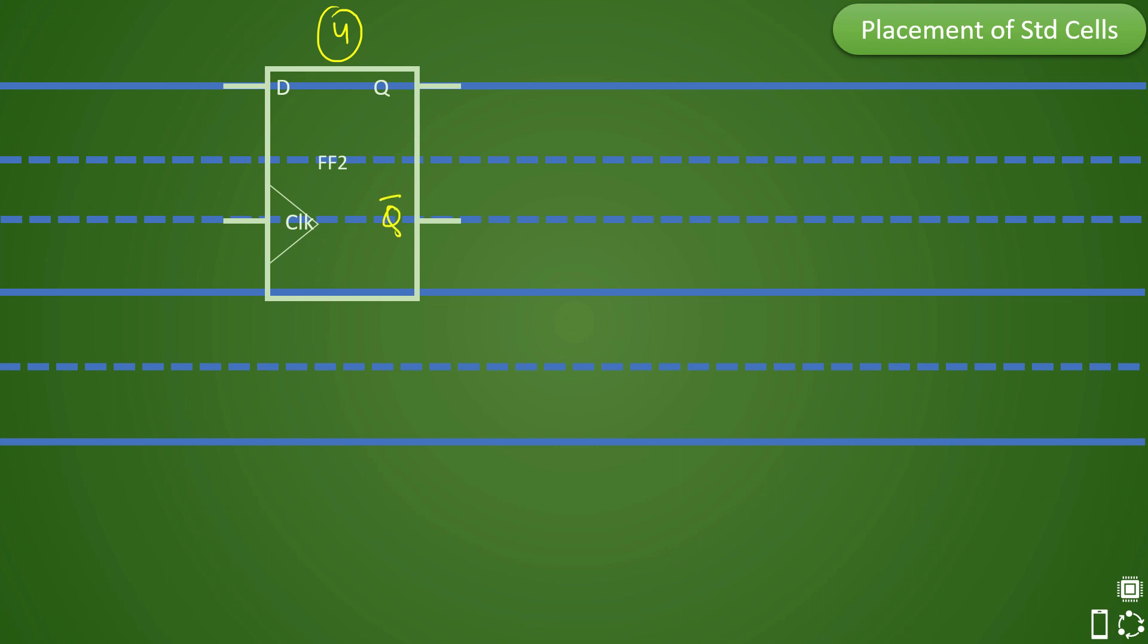There can be one more kind of flop where it is a scannable flop. So if it is a scannable flop, you will have additional number of pins such as your scan input pin and your scan enable pin and it could be scan output pin. So these are additional pins which gets added with respect to your design. So here you can see that there are seven pins. So there are four pins here, seven pins in this case.